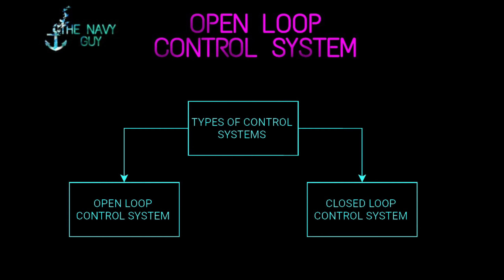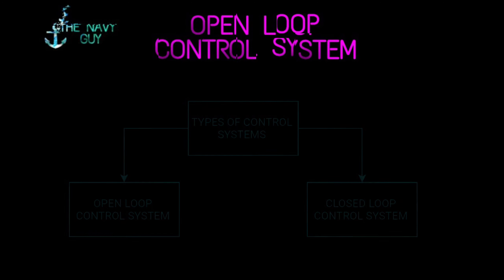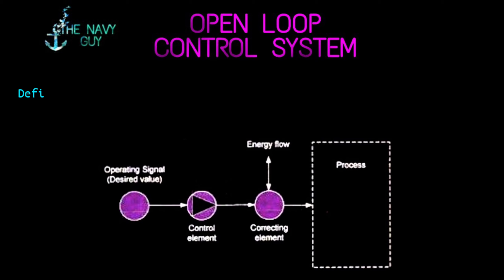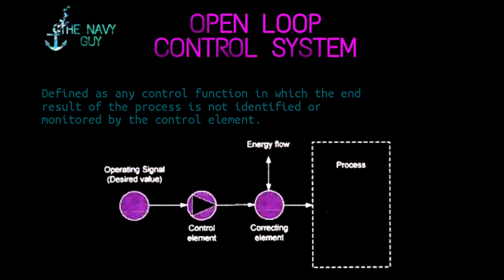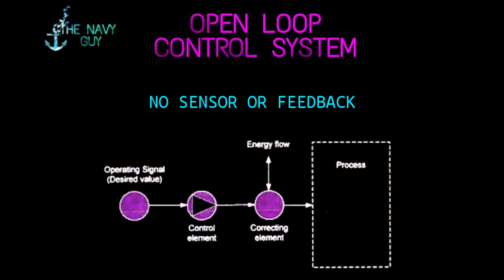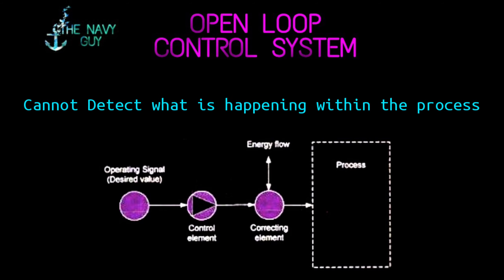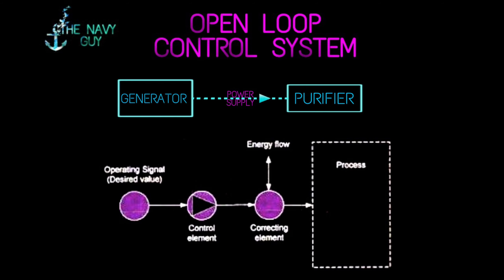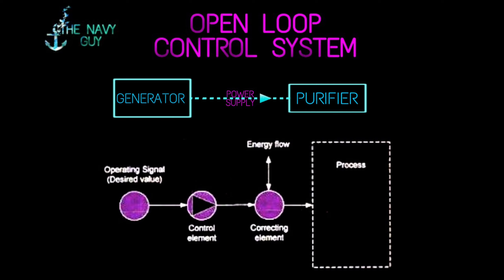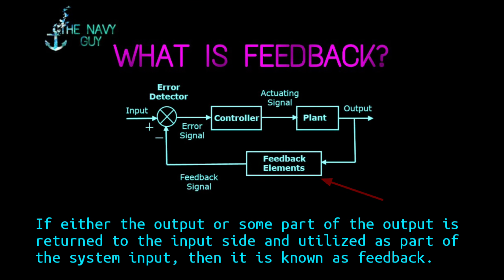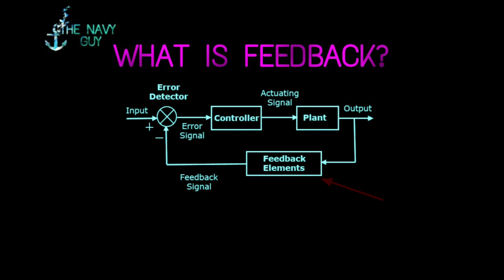There are two types of control systems: open loop and closed loop. Open loop control can be defined as any control function in which the end result of the process is not identified or monitored by the control element. There is no sensor or measuring element situated inside the feedback loop, so the control element cannot detect what is happening within the process as there is no information feedback. An example of an open loop system is the power supply from generators to a purifier motor — there is no feedback from the motor back to the generator. If either the output or some part of the output is returned to the input side and utilized as part of the system input, then it is known as feedback. Feedback plays an important role in improving the performance of control systems.